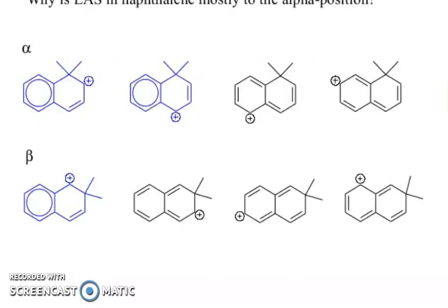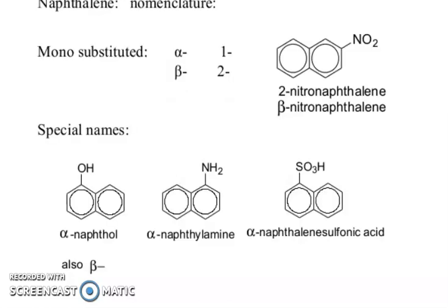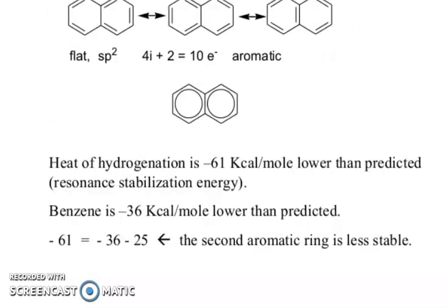Why does naphthalene react mostly at the alpha position? You can see alpha and beta forms. Naphthalene numbering: 1, 2, 3, 4, 5, 6, 7, 8, 9, 10. For mono-substituted naphthalene, alpha is position 1, beta is position 2. Naphthalene is a flat sp2, 4n+2 (10 pi electron) aromatic system. Heat of hydrogenation is −61 kcal/mol, lower than the predicted resonance stabilization energy; benzene is −36 kcal/mol. Thus −61 = −36 − 25, and the second aromatic ring is less stable.